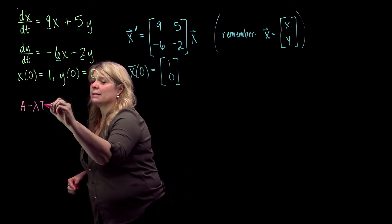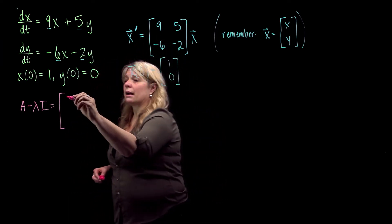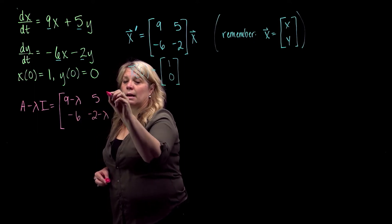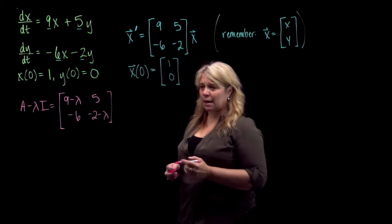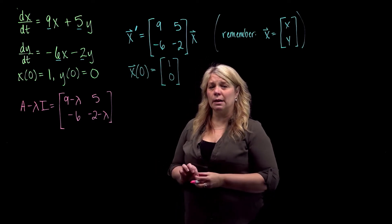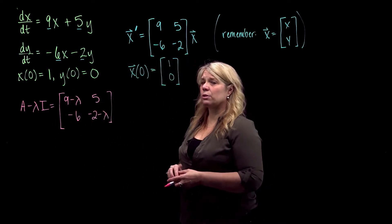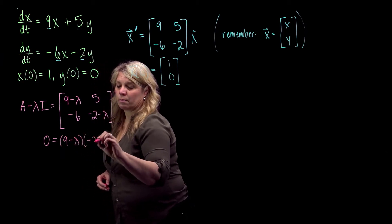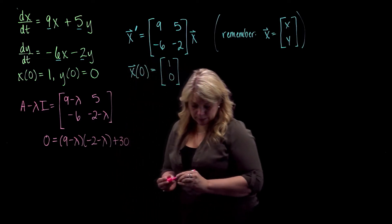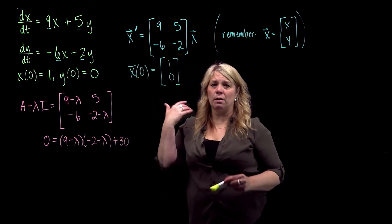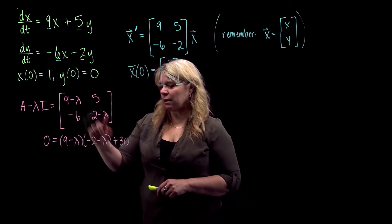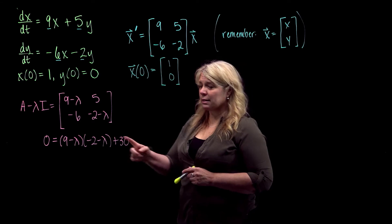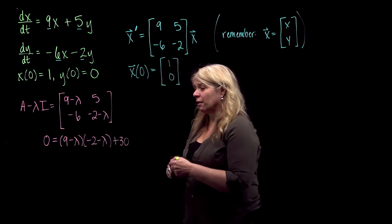I'm going to start by finding the eigenvalues of the coefficient matrix. I'll write A minus lambda I, subtracting lambdas on the main diagonal. You may know different ways to find eigenvalues — whatever correct method you know is fine. I'm going to use the determinant of this matrix set equal to zero, which gives you your eigenvalues. Be careful with your signs here — any little mistake at this step will mess up all the rest of your work.